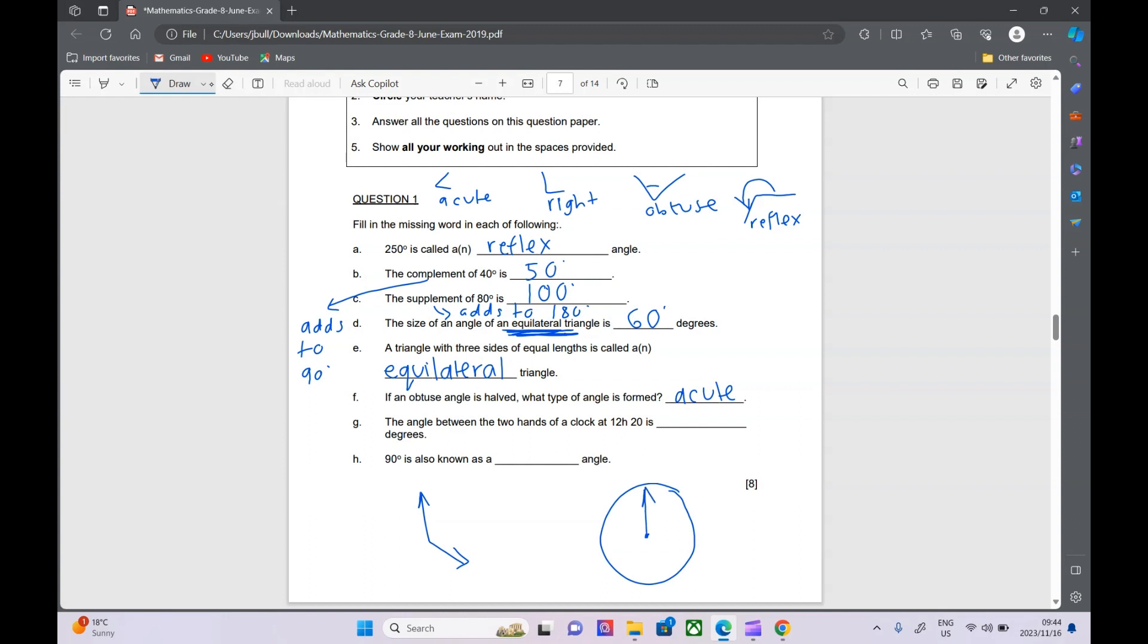They say every hour is 30 degrees. So if you went to one o'clock, it would be 30 degrees. Then two o'clock would be 60 degrees. Three o'clock would be 90 degrees. So four o'clock would be 120. So that's pretty useful general knowledge. As you can see, I didn't know that one. It's been a while since I've done this. So on a clock, every hour is 30 degrees.